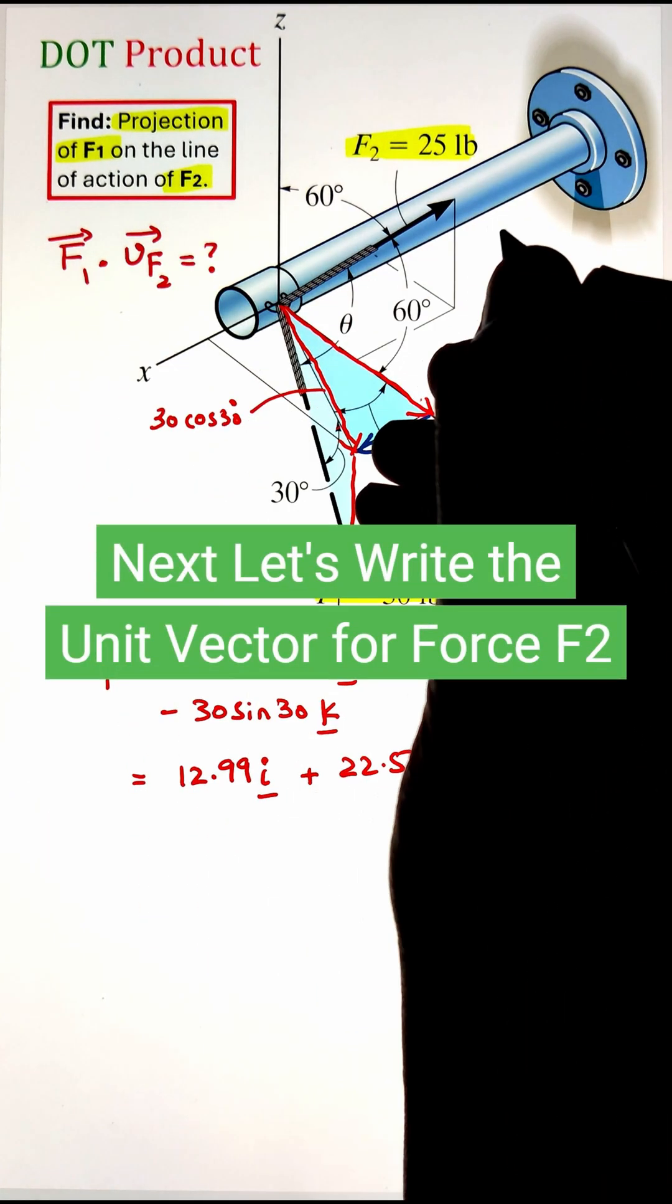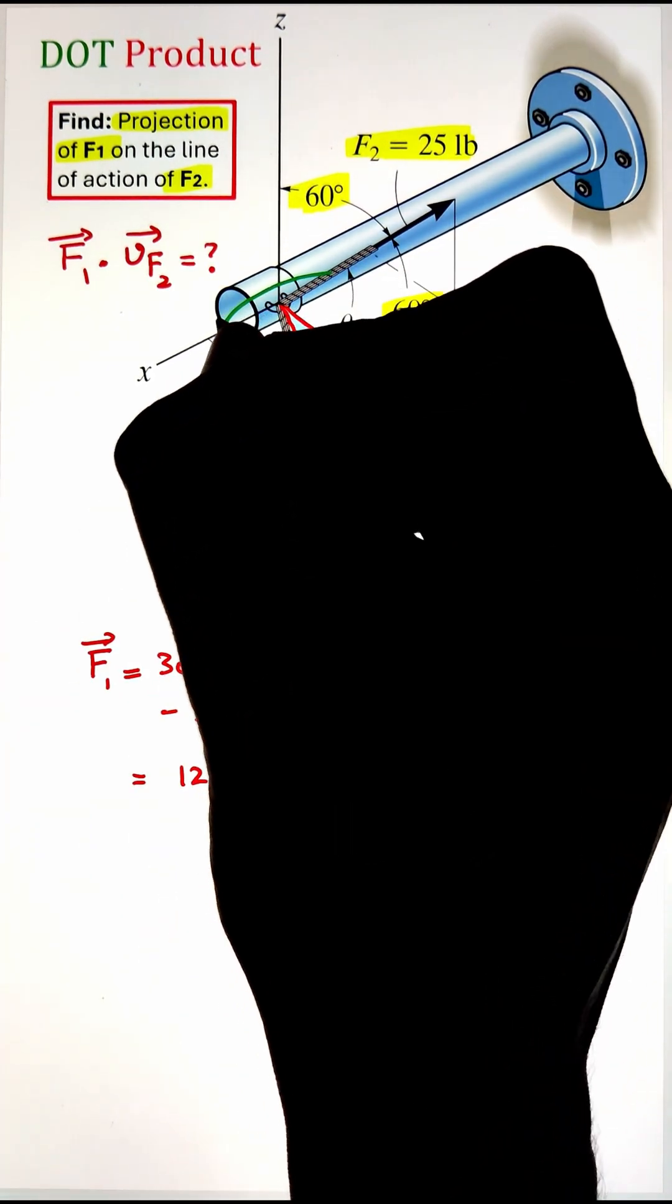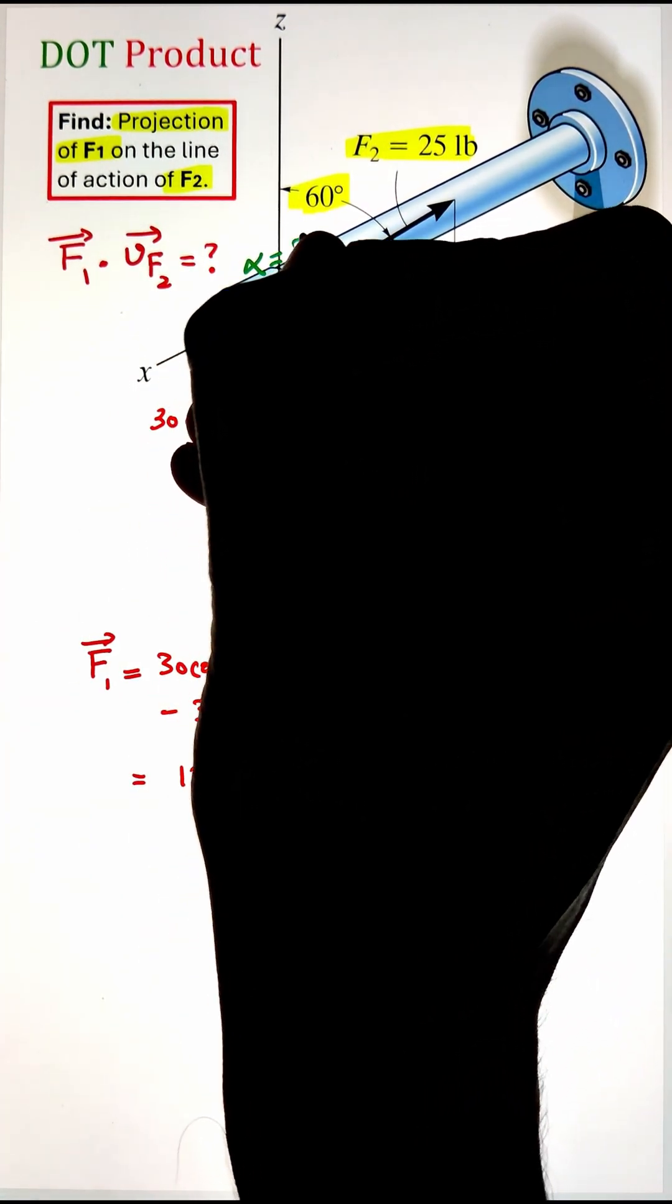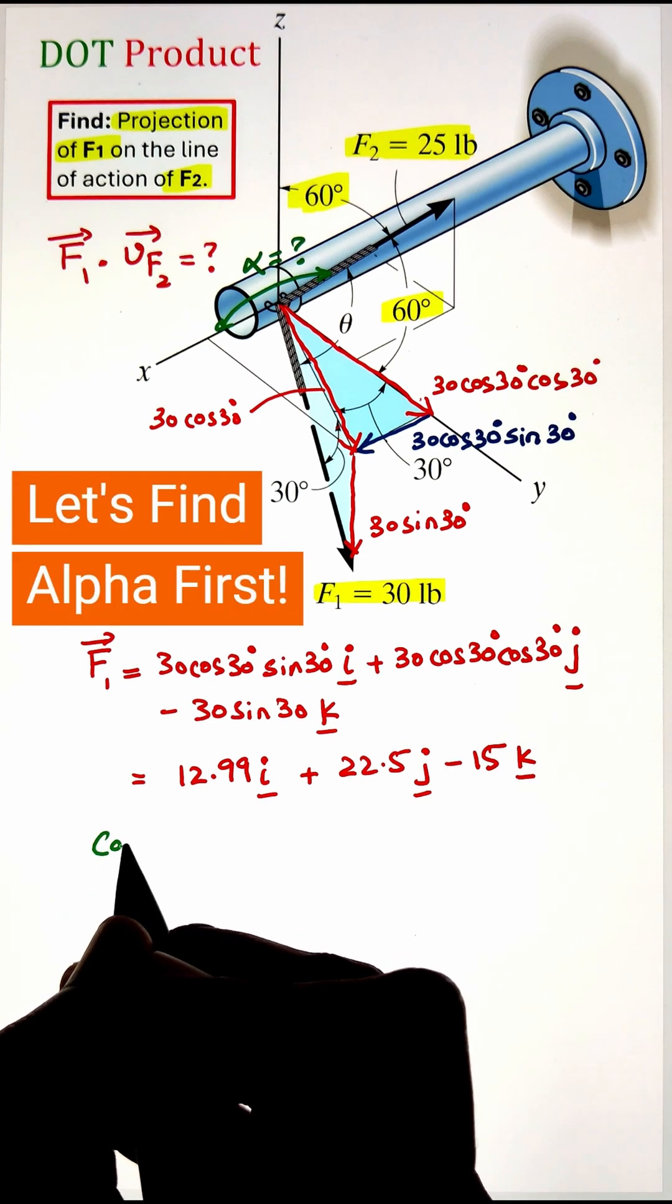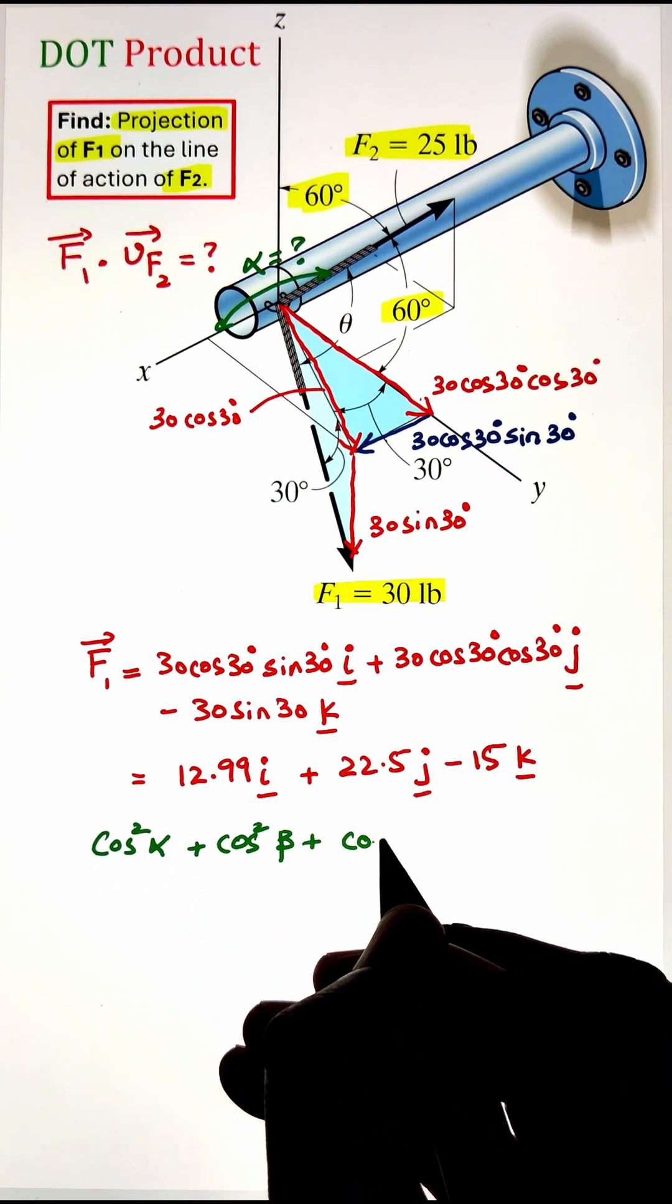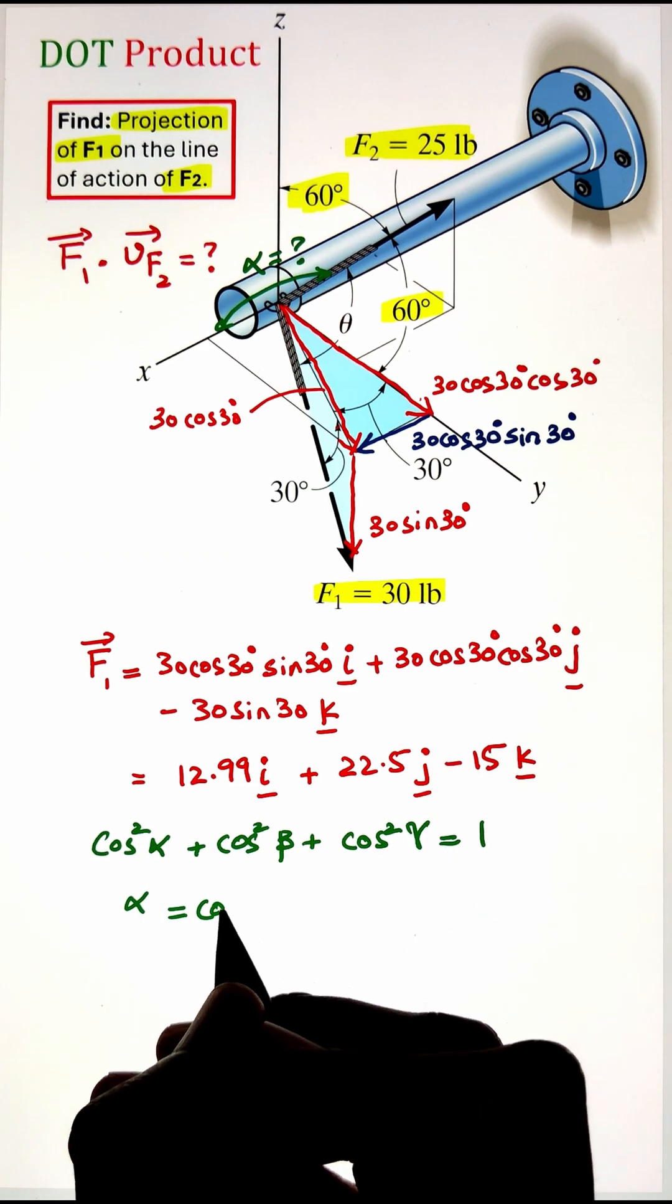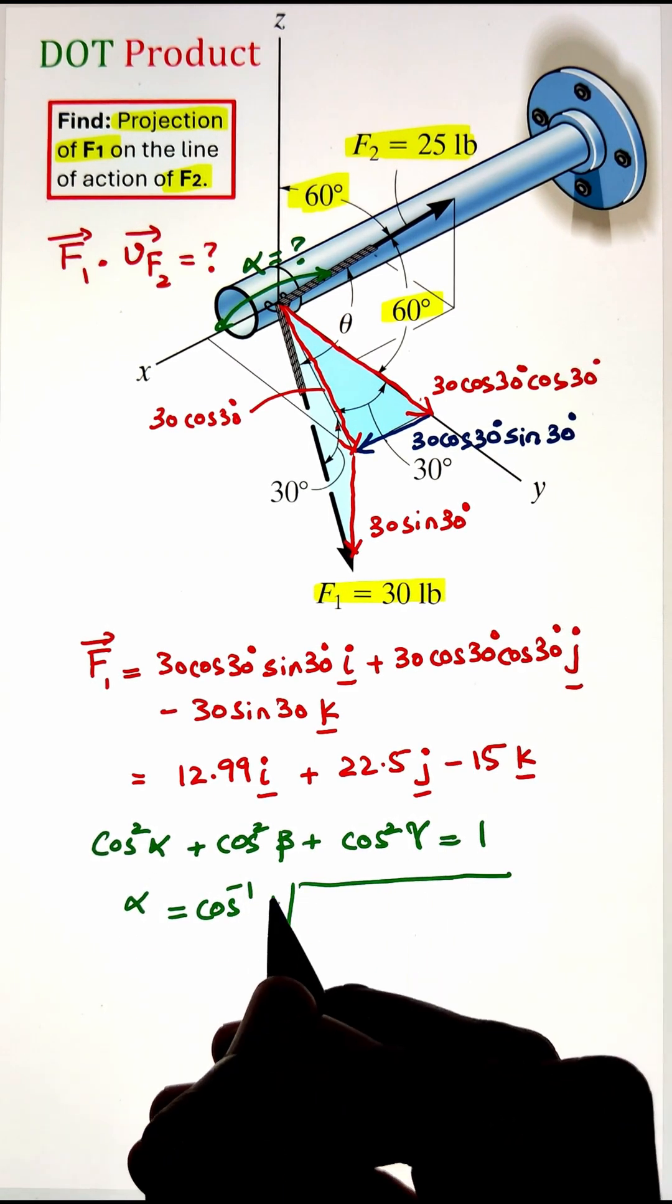Once we have F1, let's figure out our unit vector of force F2. So here the force F2 is making an angle of 60 degrees with the y axis and 60 degrees with the z axis as well. However, the angle with the x axis is unknown. So first, let us solve for this angle alpha.